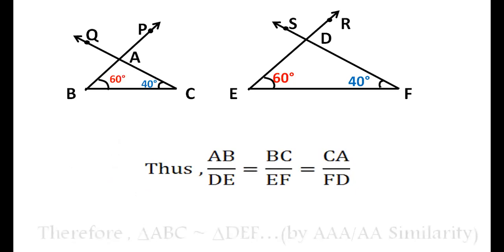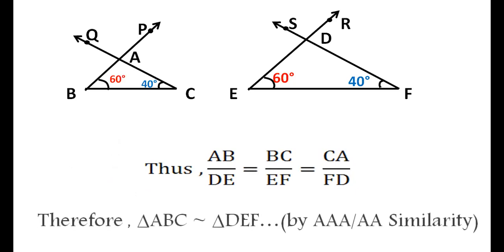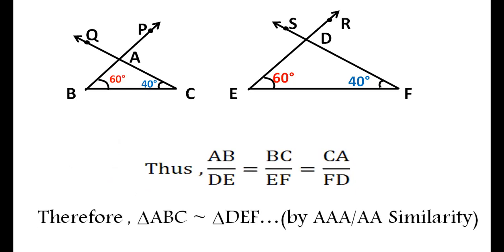Triangle ABC is similar to triangle DEF by angle-angle-angle similarity. This criterion is also called the angle-angle similarity criterion, because if two angles are equal in two triangles, obviously the third angle will be equal by the angle sum property of triangles.